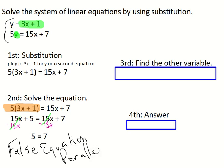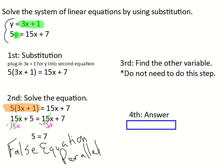So again, it's a false equation or parallel lines. There's no more x's in your solving when you're solving that equation. So when you're finding the other variable, you don't need to because you have parallel lines. And you know parallel lines do not intersect each other. Therefore, the answer to this system of equations is there's no solution.